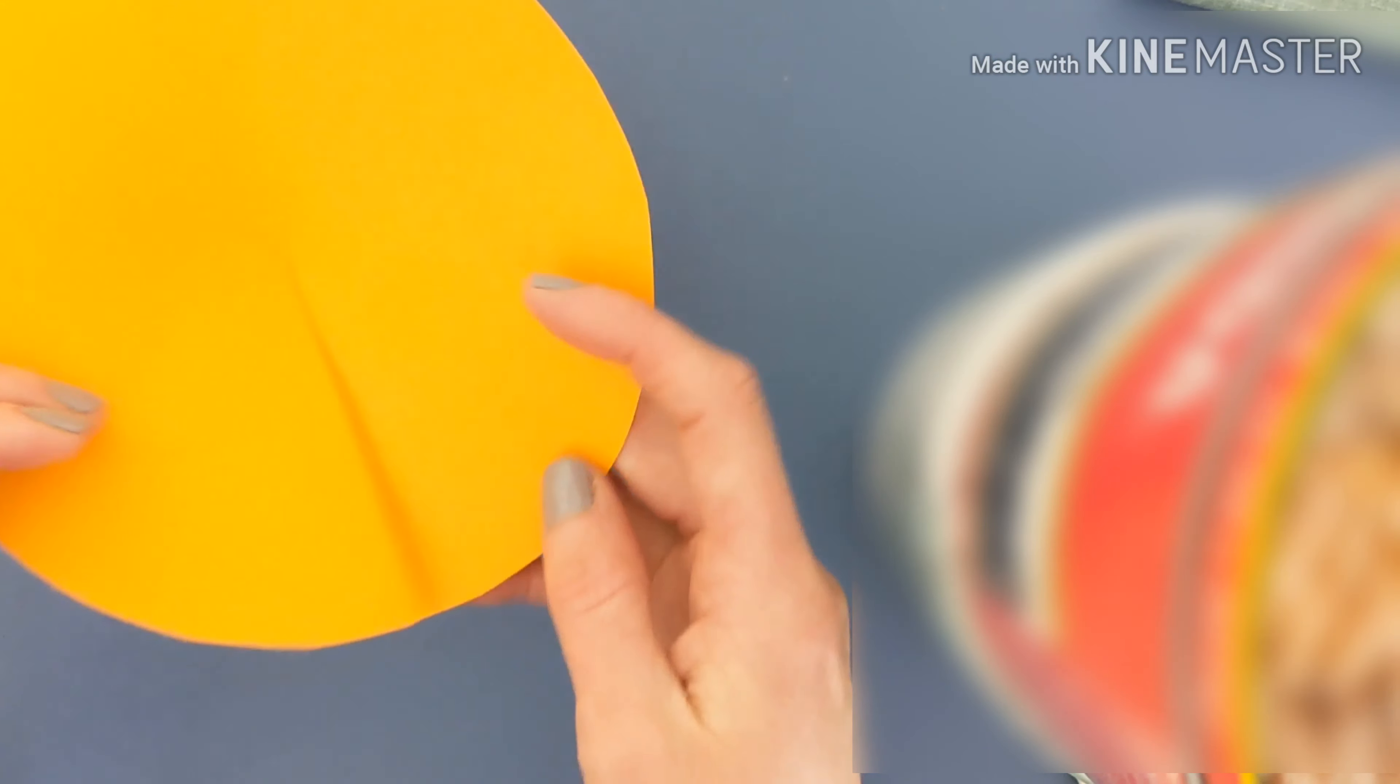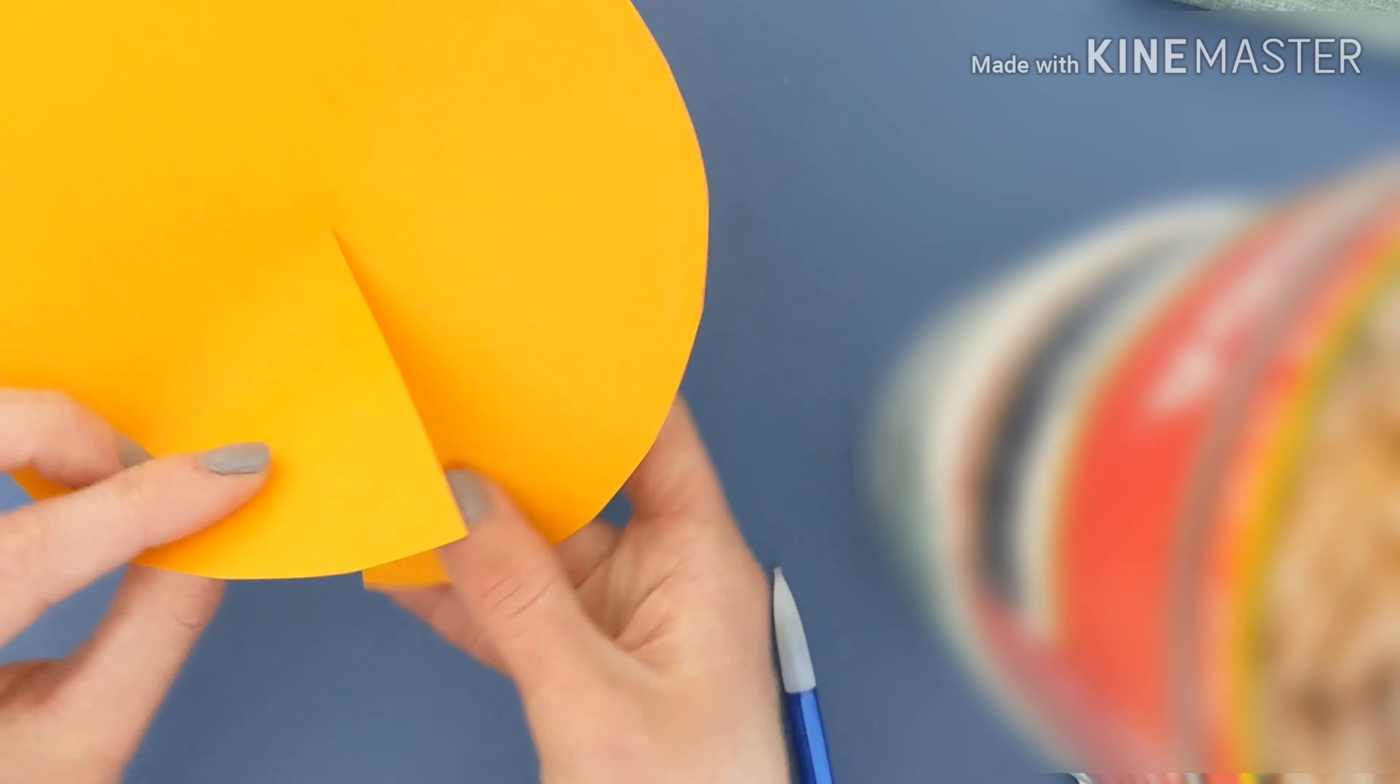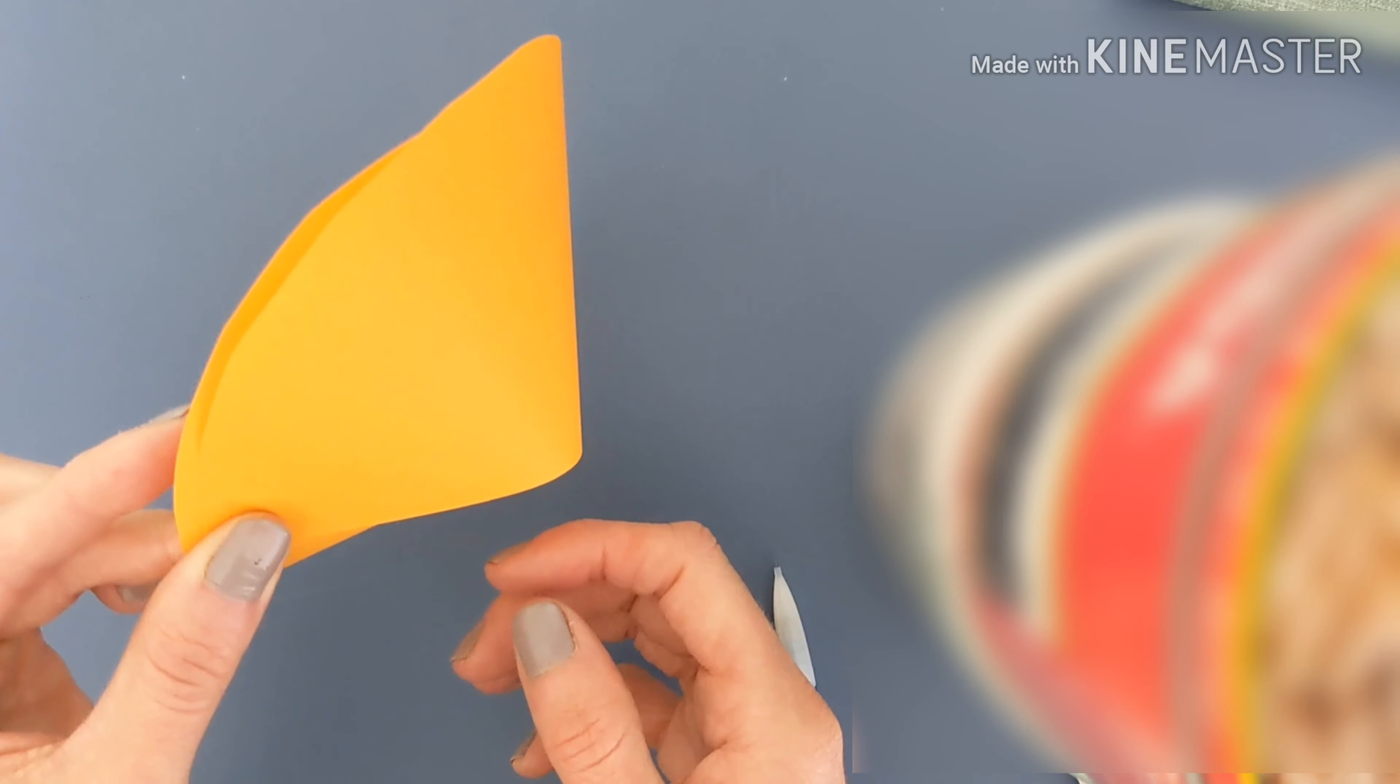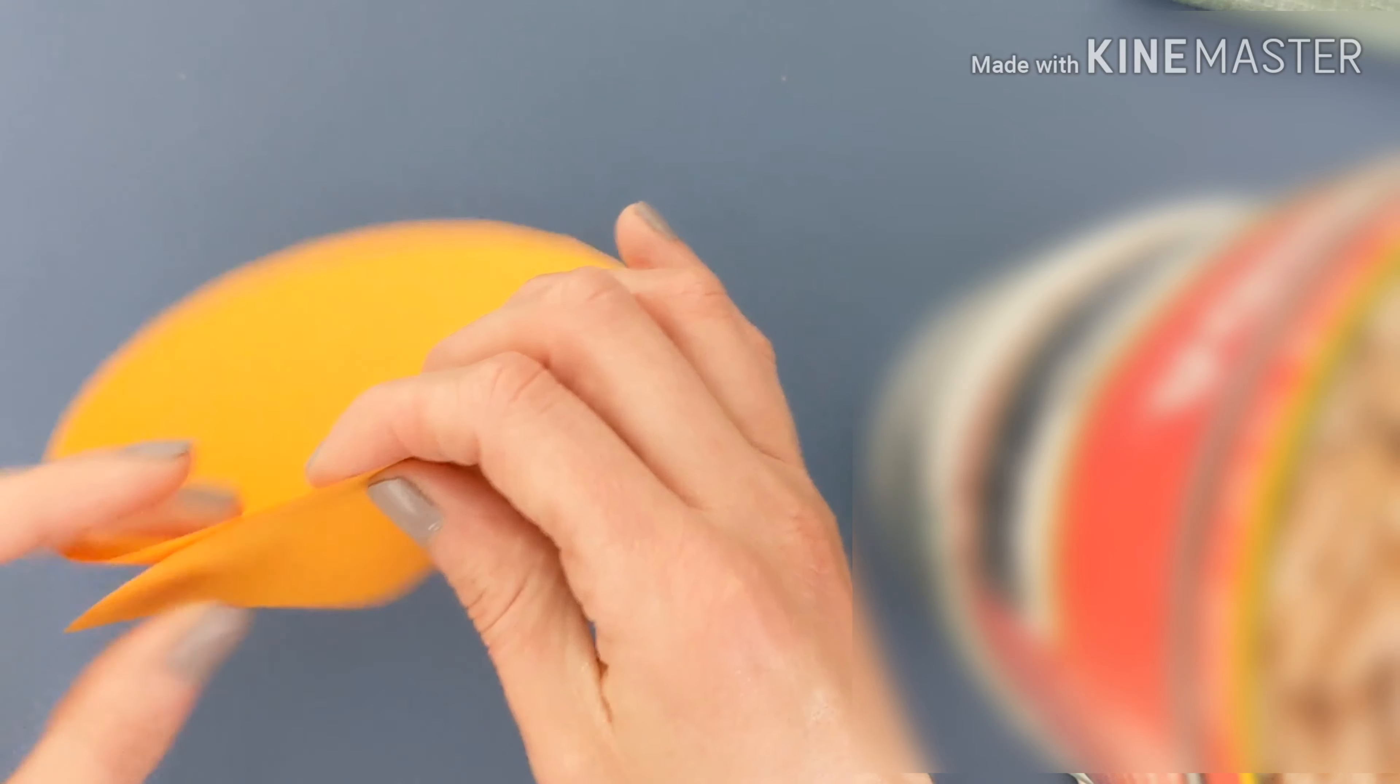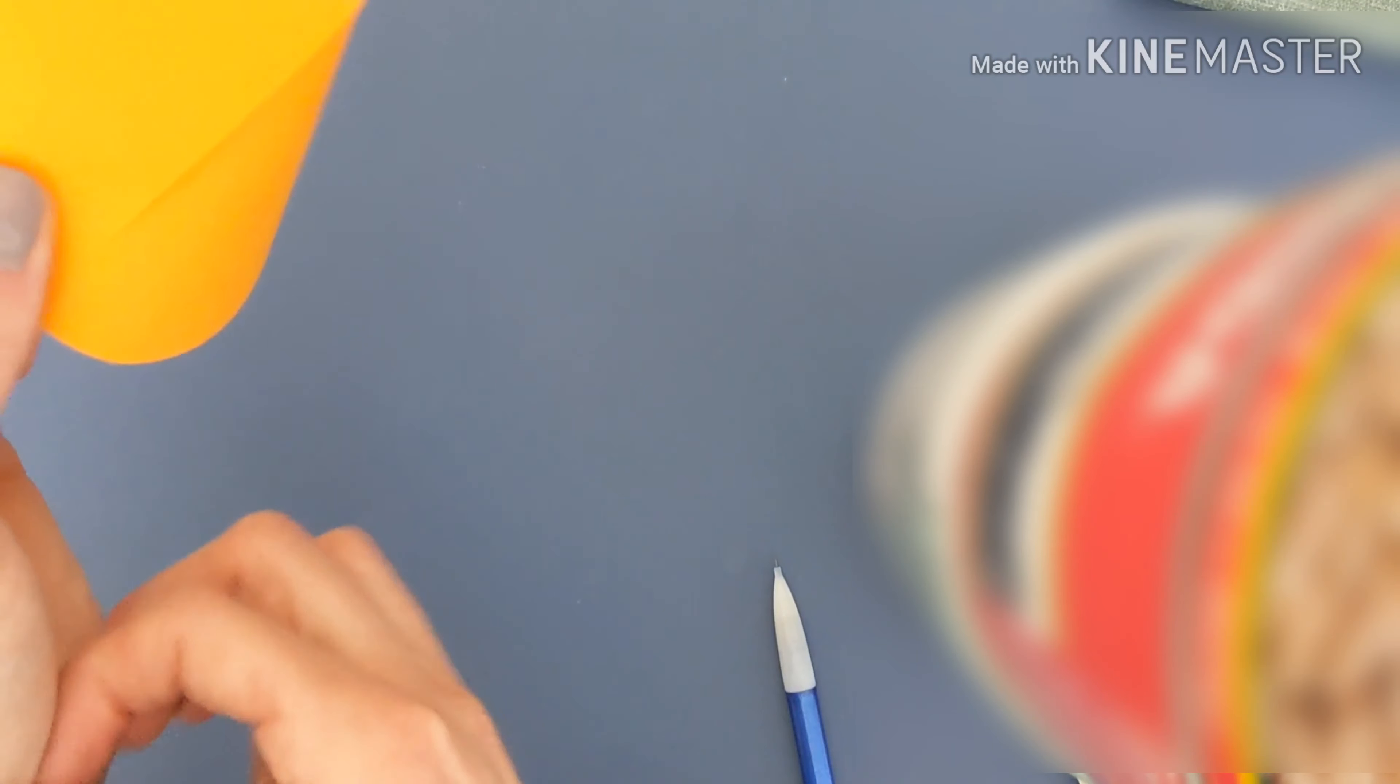Make a funnel out of your circle. So you're going to overlap one end of the circle over top the other, and it should make a cone shape. And then tape that together.